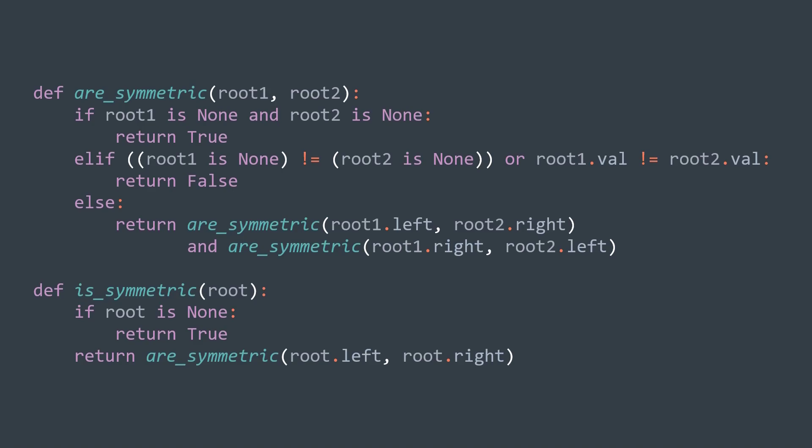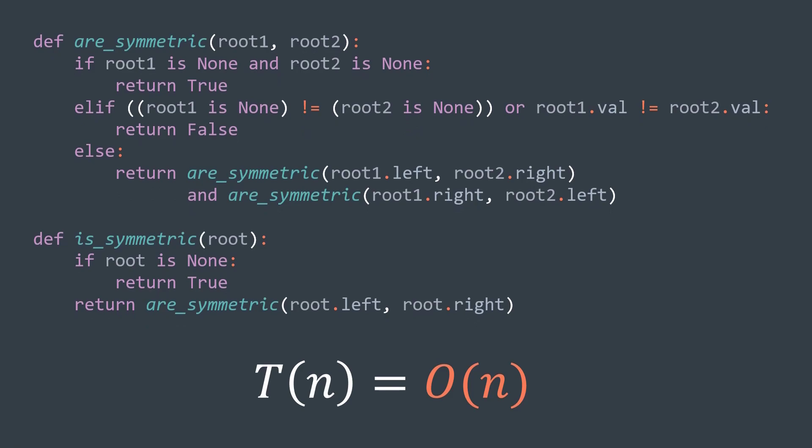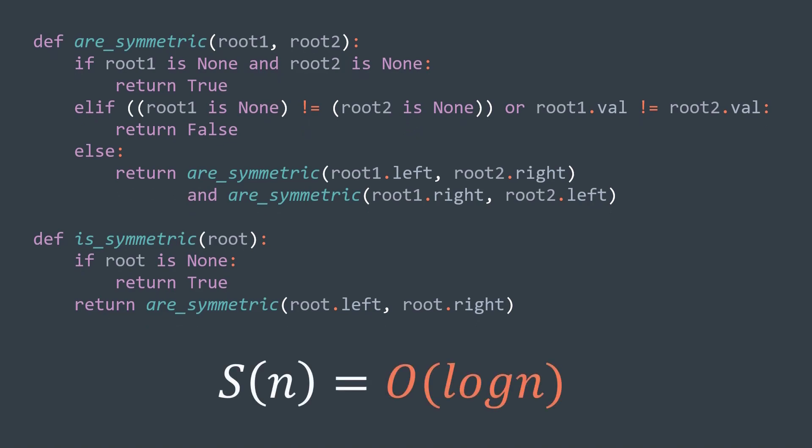For the time complexity, we're just performing a depth first search traversal of the input tree, and DFS costs O(n) time where n is the number of nodes. For the space complexity, a symmetric tree has to be balanced, and the call stack size needed by a recursive function that traverses a balanced binary tree is O(log n). We get an O(log n) space complexity.